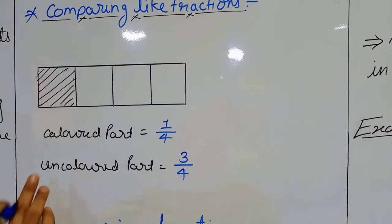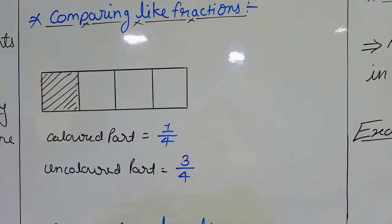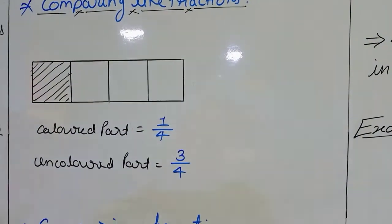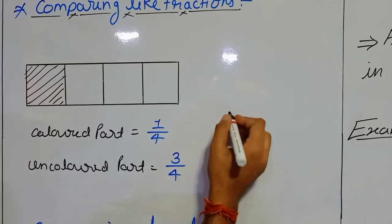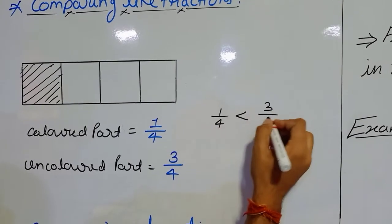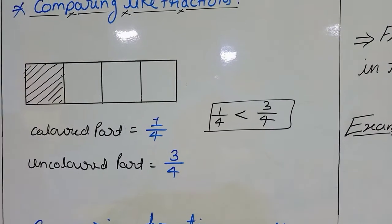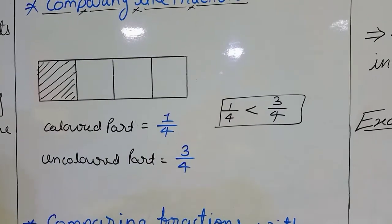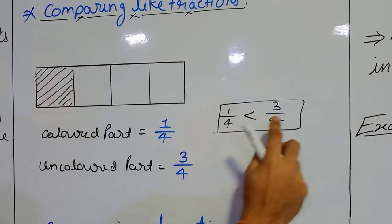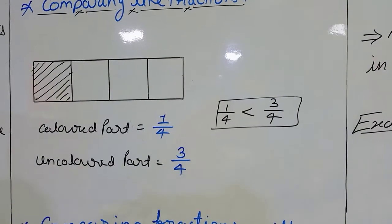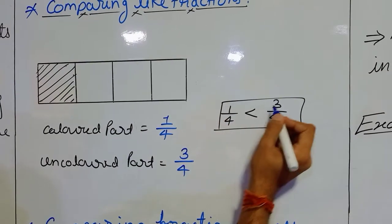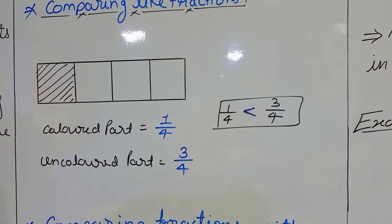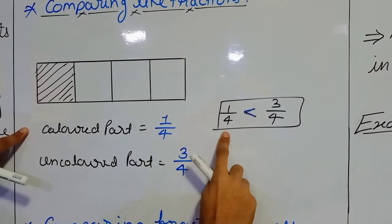Now, looking at the two parts — colored and uncolored — which one is the greater? If you are able to see, the uncolored part is greater than the colored part. So we come to know that 1 upon 4 is less than 3 upon 4. For the conclusion: if we have equal denominators, meaning like fractions, and we want to do the comparison, it depends on the numerator. Here 4 and 4 are equal denominators, and we have numerators 1 and 3 — since 3 is greater than 1, we can say 3 upon 4 is greater than 1 upon 4.